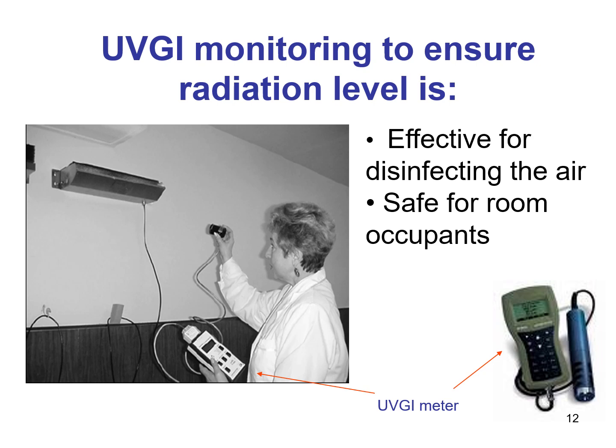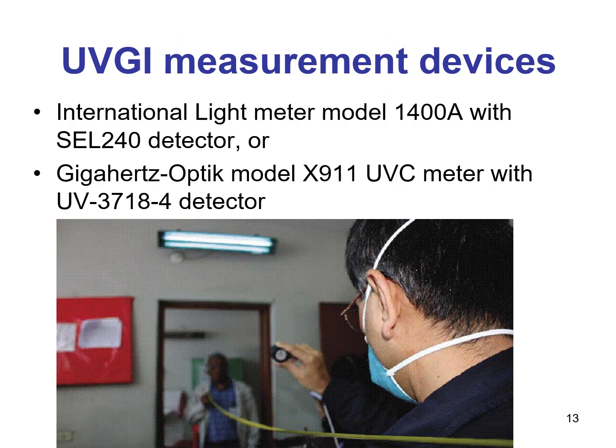Public health specialists can conduct routine UVGI measurements to determine the performance of these devices. Monitoring is important to ensure that the radiation level is effective for disinfecting the air and is safe for room occupants. Routine measurements should be performed by specialist technicians. UVGI measurement devices include the International Light meter model and the Gigahertz Optic detector model.